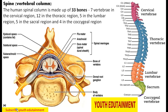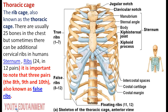Next, we will talk about the spine. The human spinal column is made up of 33 bones: 7 vertebrae in the cervical region, 12 in the thoracic region, 5 in the lumbar region, 5 in the sacral region, and 4 in the coccygeal region. You may see this in the diagram.